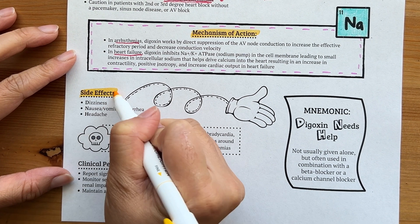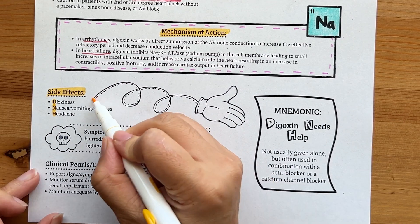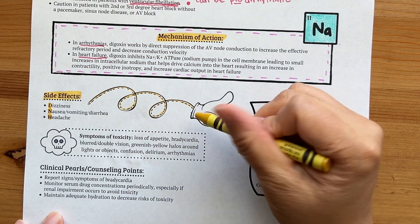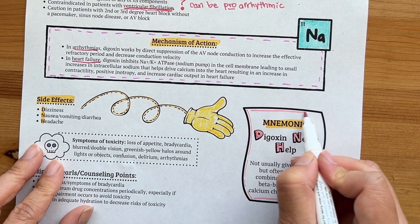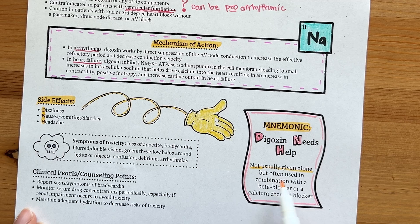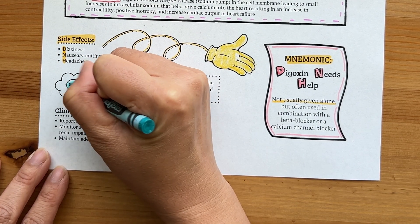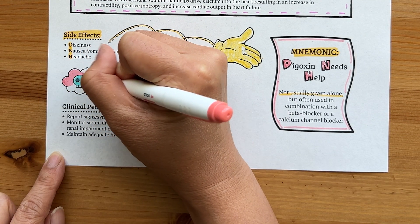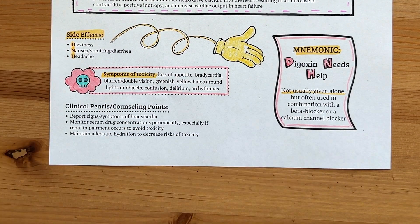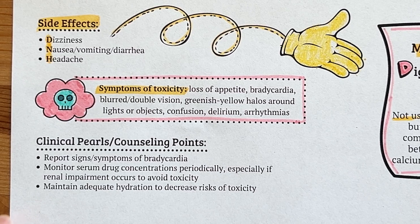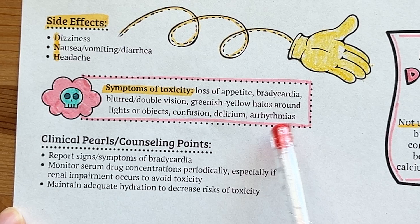Moving on to side effects. When you think of digoxin, think of the mnemonic DNH, which stands for 'Digoxin Needs Help.' This should remind you that this drug is not usually given alone, but is used in combination with a beta blocker or a calcium channel blocker. Digoxin is often not given first line because of the serious side effects that can occur with digoxin toxicity. Less serious side effects: D stands for dizziness, N stands for nausea and/or vomiting, and H stands for headache. Key toxicity symptoms include loss of appetite, bradycardia, blurred and/or double vision, greenish-yellow halos around lights or objects, confusion, delirium, and arrhythmias.